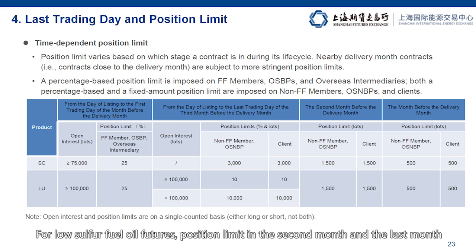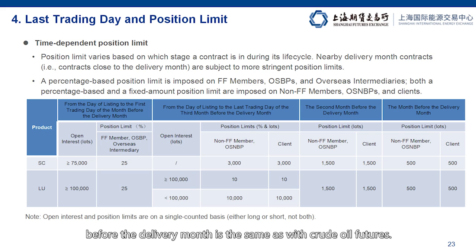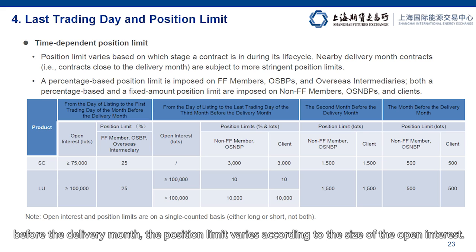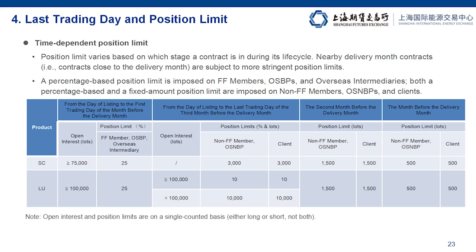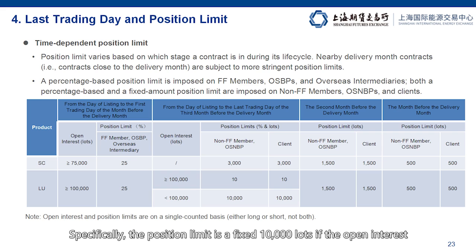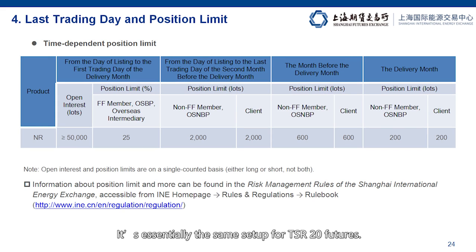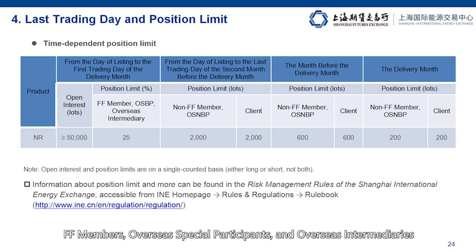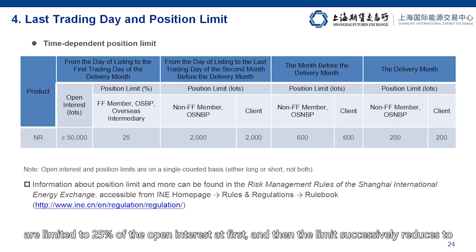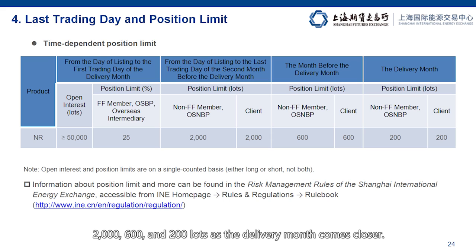The position limit reduces to 1,500 lots throughout the second month before the delivery month, and 500 lots until the last day of trading of the month before the delivery month. As we can see, the closer we are to the delivery month, the lower the position limit will be. For low sulfur fuel oil futures, the position limit in the second month and the last month before the delivery month is the same as with crude oil futures. But from the listing date to the last day of trading of the third month before the delivery month, the position limit varies: it is a fixed 10,000 lots if the open interest is less than 100,000 lots, and 10% of the open interest otherwise. For TSR20 futures, FF members, overseas special participants, and overseas intermediaries are limited to 25% of the open interest at first, and then the limit successively reduces to 2,600 and 200 lots as each month comes closer.